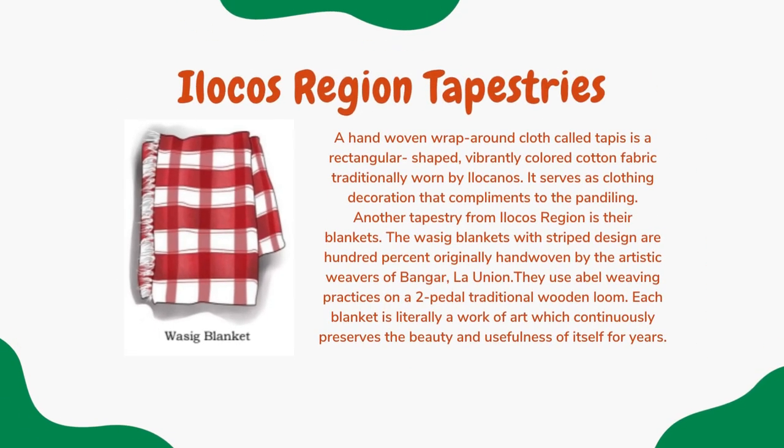Ilocos Region tapestries include the tapis, a hand-weaving wrap-around cloth that is rectangular-shaped, vibrantly-colored, and traditionally worn by Ilocanos as clothing decoration complementing the pandiling. Another tapestry from Ilocos Region is the wasic blanket with striped design, which is 100% originally hand-woven by the weavers of Bangar, La Union. They use a bell-weaving practice on a two-pedal traditional wooden loom, and each blanket is a work of art that preserves its beauty and usefulness for years.